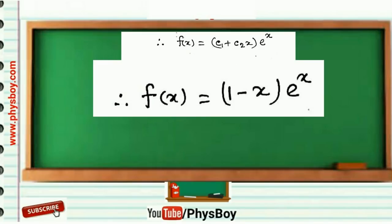Now using the value of c₁ and c₂ we get f(x) = (1 - x)e^x, so f(0.5) will be 0.82 approximately.